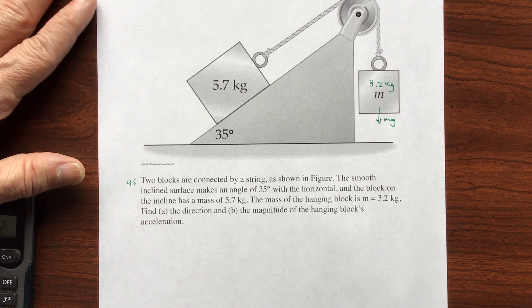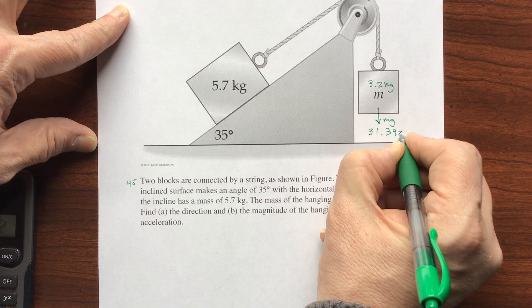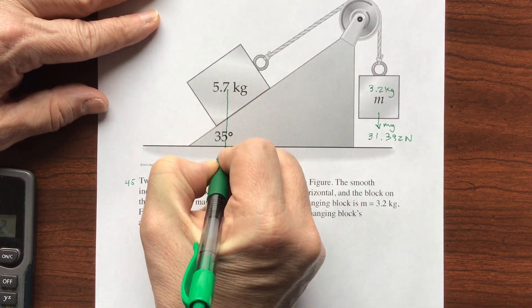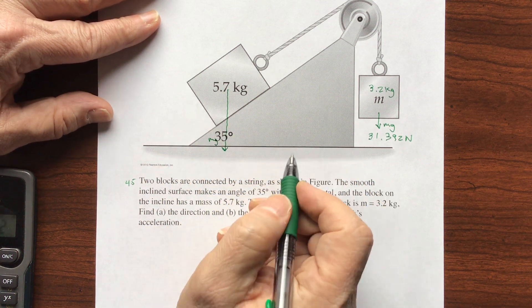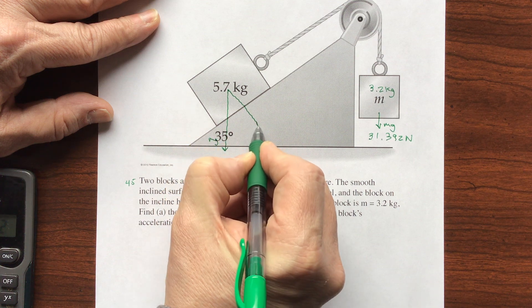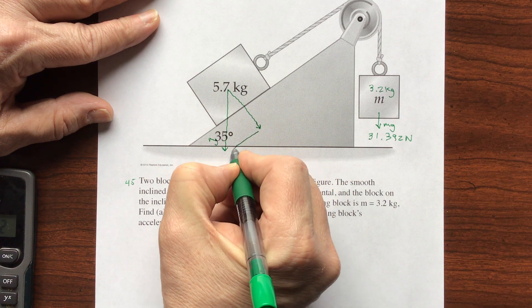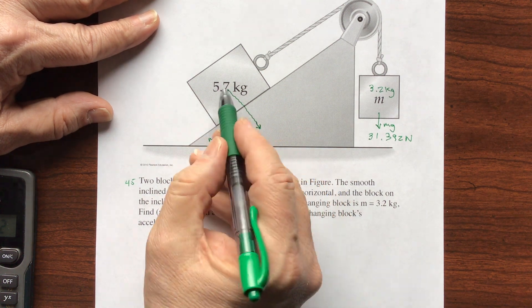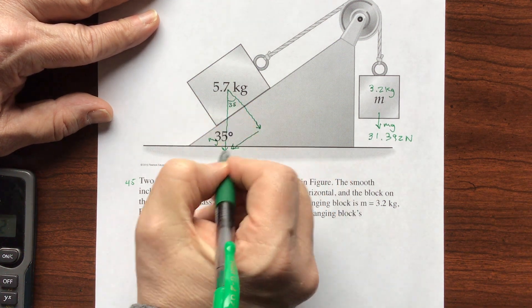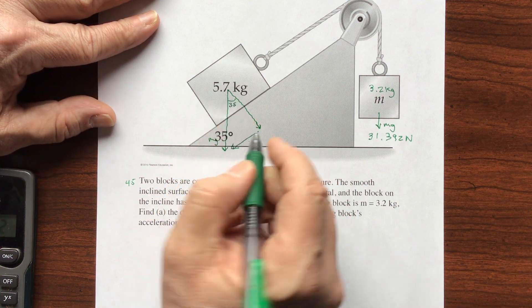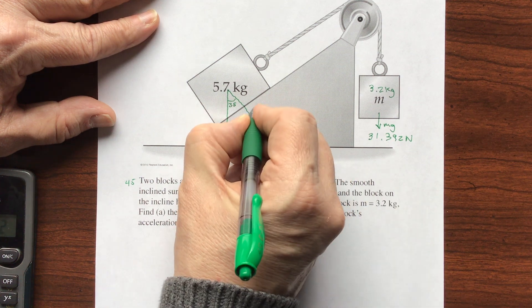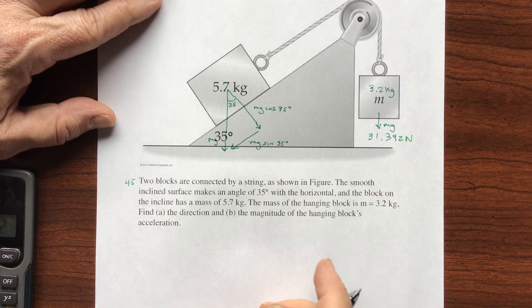So I have that as 31.392 newtons. I'll do all the rounding at the end. So we want to do this one. This is going to go straight down. This is mg. But since this is on an incline, I'm going to break this into two components. I'm going to do this one that acts down into the plane, and then one that is parallel to the slope. So this one is going to be the cosine. So this, if this is 35 degrees, this is also going to be 35 degrees. And using just some basic trigonometry, we'll see that the opposite of this is mg times the sine of 35 degrees.